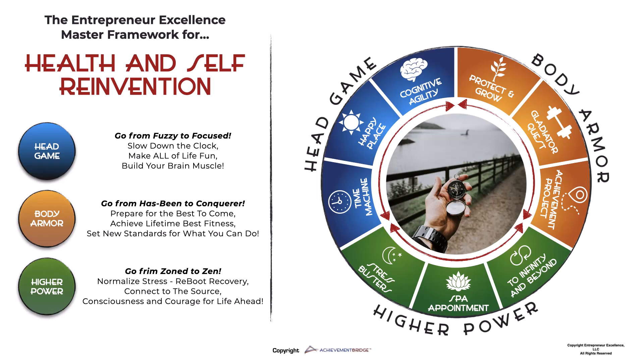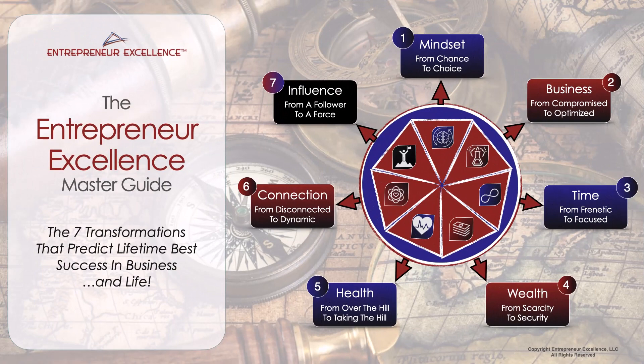Here's an example of our master guide for the Entrepreneur Excellence Alliance. You'll see we're using seven different phases or sections, and behind each one of those seven is an immense array of other frameworks and guidance for achievement. It very simply starts at 12 o'clock: high mindset, business breakthrough, time mastery, wealth accumulation, health, connection, and influence. These are all essential transformations in and of themselves that predict entrepreneur excellence. It's a roadmap, a framework — a way for people to know that you know where they're going.